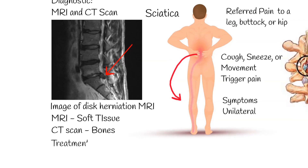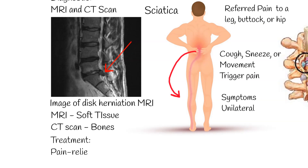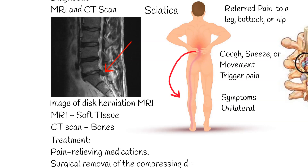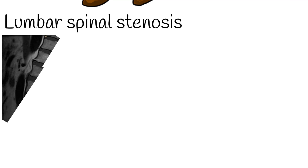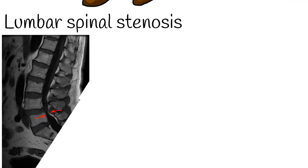The first line of treatment is pain-relieving medications. If pain is persistent despite medication, surgical removal of the compressing disc material is indicated. Lumbar spinal stenosis describes a narrowed lumbar spinal canal.